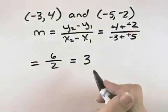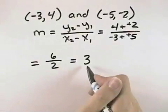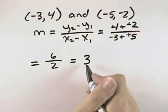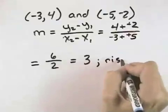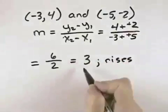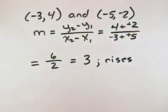So my slope for this problem is 3. And then, looking at this, a positive slope would represent a rise. So for this one, the slope rises. It will rise 3 units for every 1 unit it goes to the right.